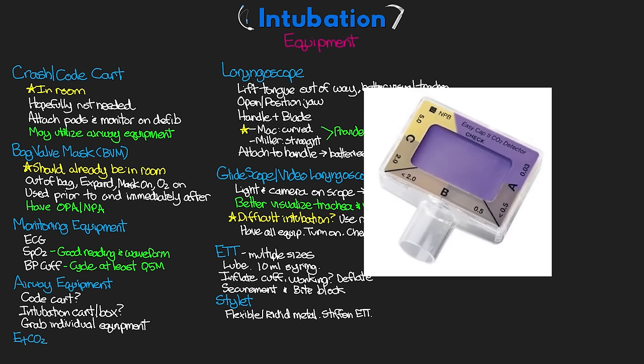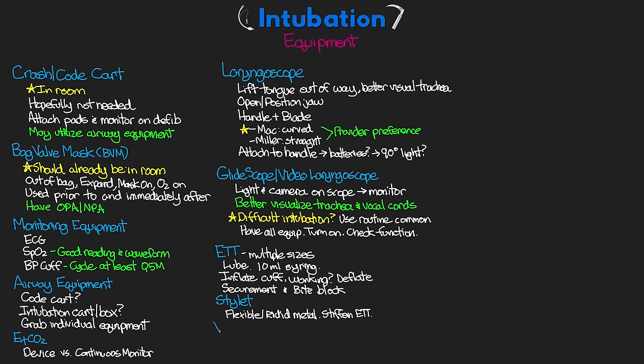You're also going to need your end-tidal CO2 detector. We typically use a small colorimetric device that attaches to the end of the ET tube and to our bag valve mask; it changes color when CO2 is detected. We can also use a continuous end-tidal CO2 monitor, so make sure you have everything ready for whichever setup you'll be using.